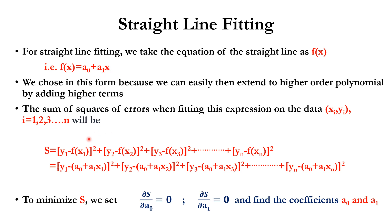For a straight line fitting, the sum of the squares of the errors will be [y₁ - f(x₁)]² plus [y₂ - f(x₂)]², and so on. Now, f(x₁) is substituted, f(x₂) is substituted, f(x₃) substituted, and f(xₙ) is substituted. After that, we minimize this S value with respect to a₀ and with respect to a₁. That is, we are finding the condition that minimizes the sum of squares of errors S with respect to the coefficients a₀ and a₁.